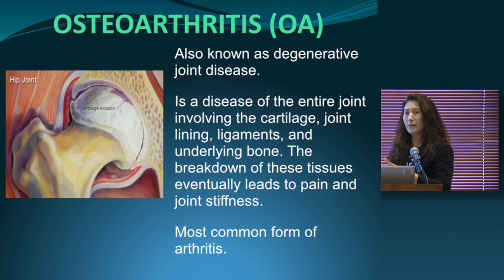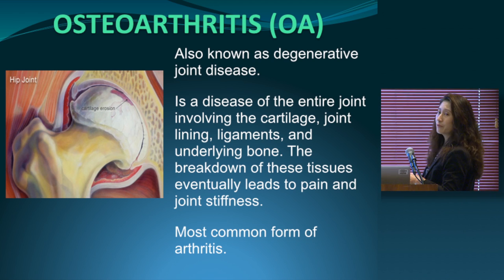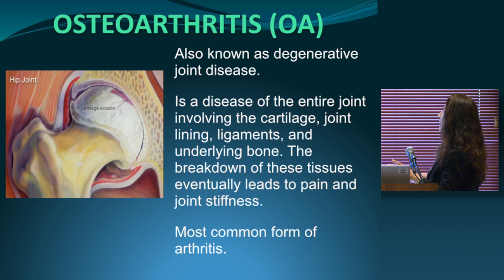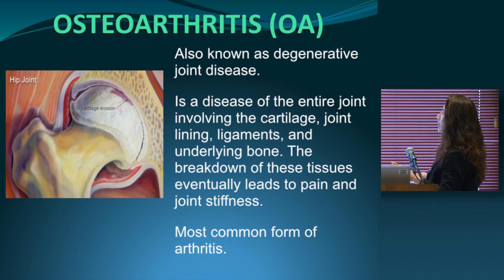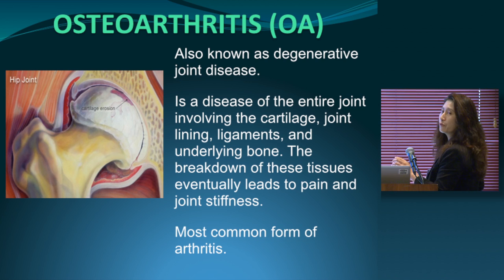Now, focusing on osteoarthritis — also known as degenerative joint disease — it is a disease of the entire joint involving the cartilage, the lining of the joints, capsules, ligaments, and underlying bones. With osteoarthritis, the cartilage starts to wear off, and when it becomes more severe the underlying bones can be destroyed. This inflammatory process in the joint eventually causes pain and stiffness. It is the most common form of arthritis.